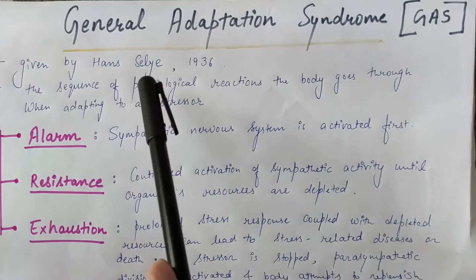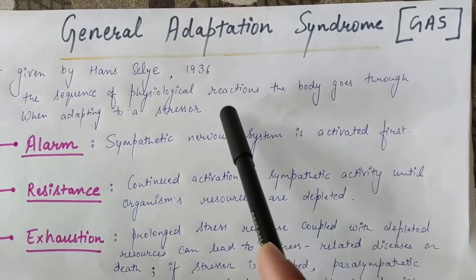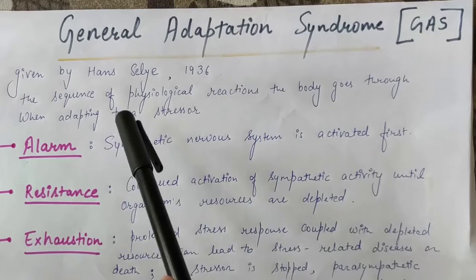Let's talk about General Adaptation Syndrome, which was given by Hans Selye in 1936. This model talks about how during stress our body reacts towards a stressor and how our body adapts with any stressor.